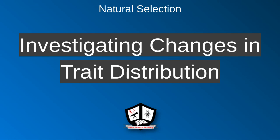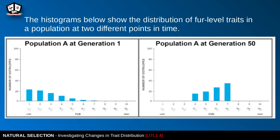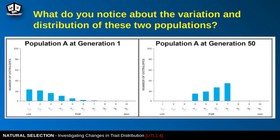Still looking at natural selection, this time investigating changes in trait distribution. Here we have two different histograms showing the distribution of fur-level traits in a population at two different points in time. We have generation 1 and the same population A at generation 50. Examine those two histograms and notice what you can about the variation and distribution of these two populations.